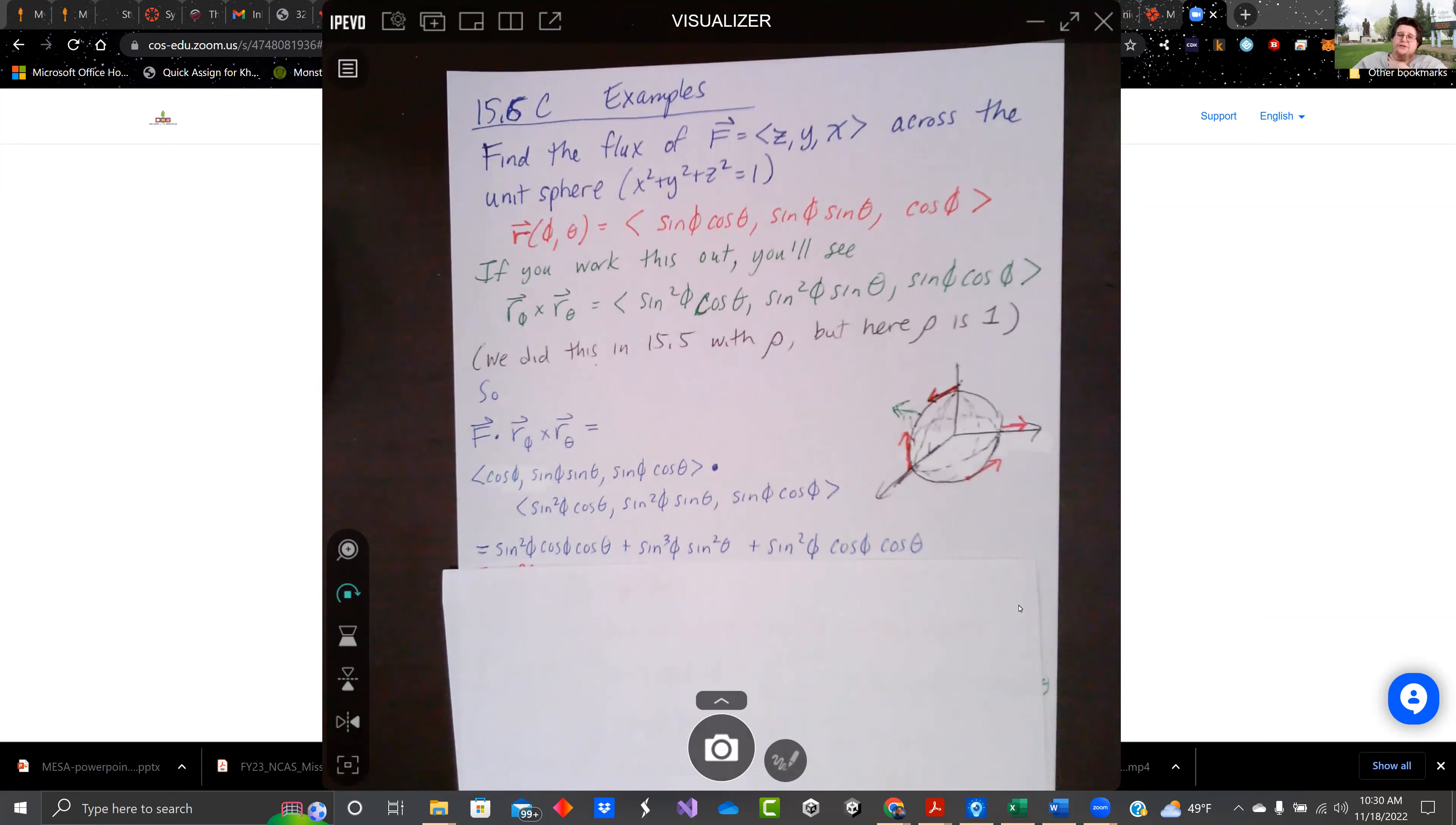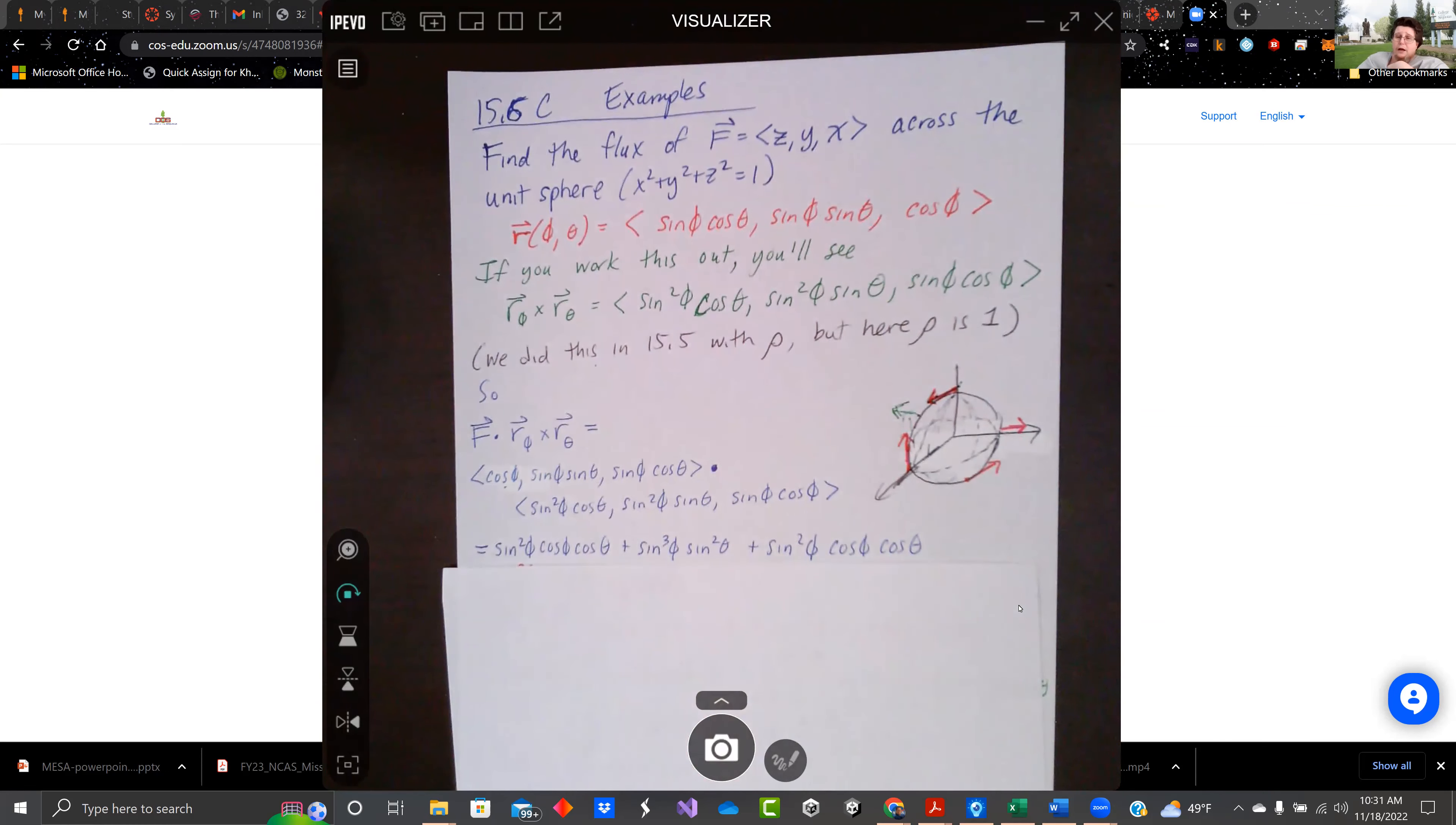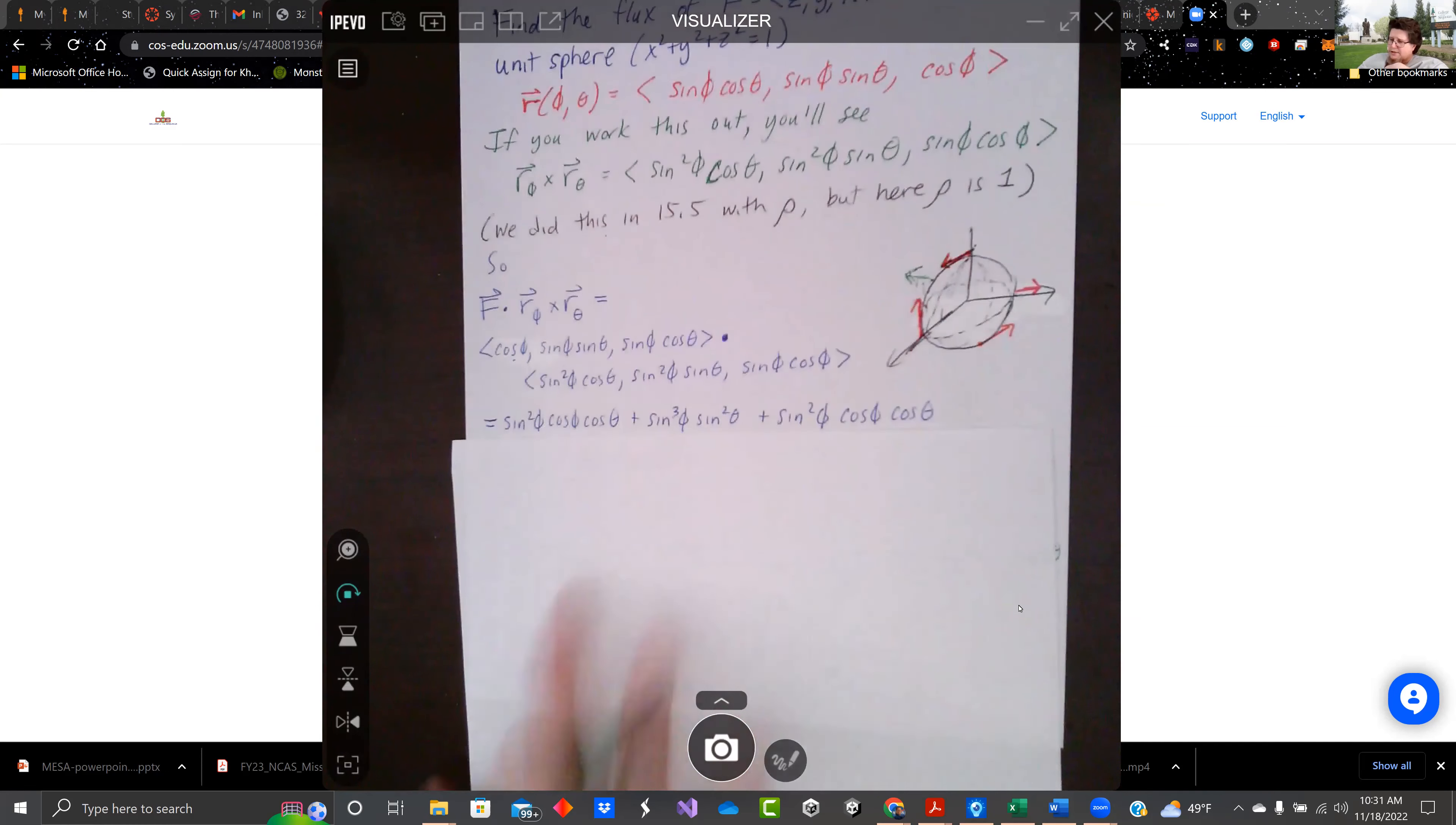We know the equations for X, Y, and Z in spherical. And so Z is rho cosine phi, and Z was our X component. So you can follow it through. When you do the dot product, you get that.